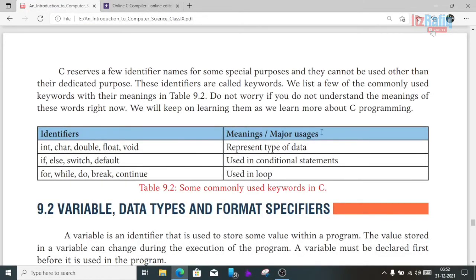Now, a series of identifiers reserved for some special purpose that cannot be used other than their dedicated purpose are called keywords. We list a few commonly used keywords with their meanings in table 9.2. Do not worry if you do not understand the meaning of these words right now, we will keep learning them as we learn more about C programming.